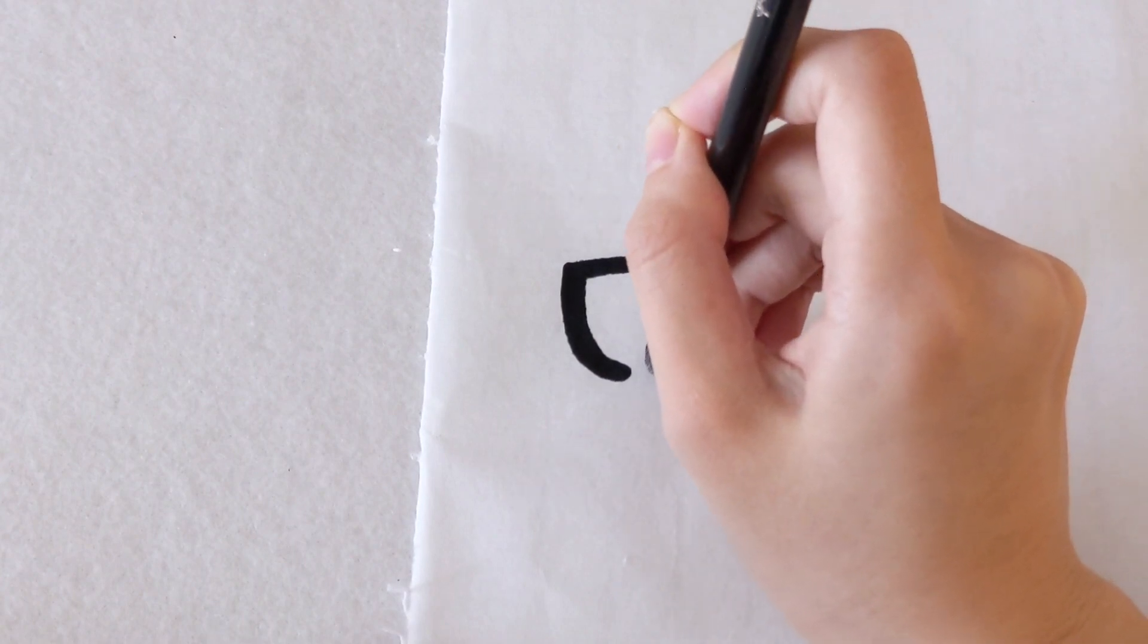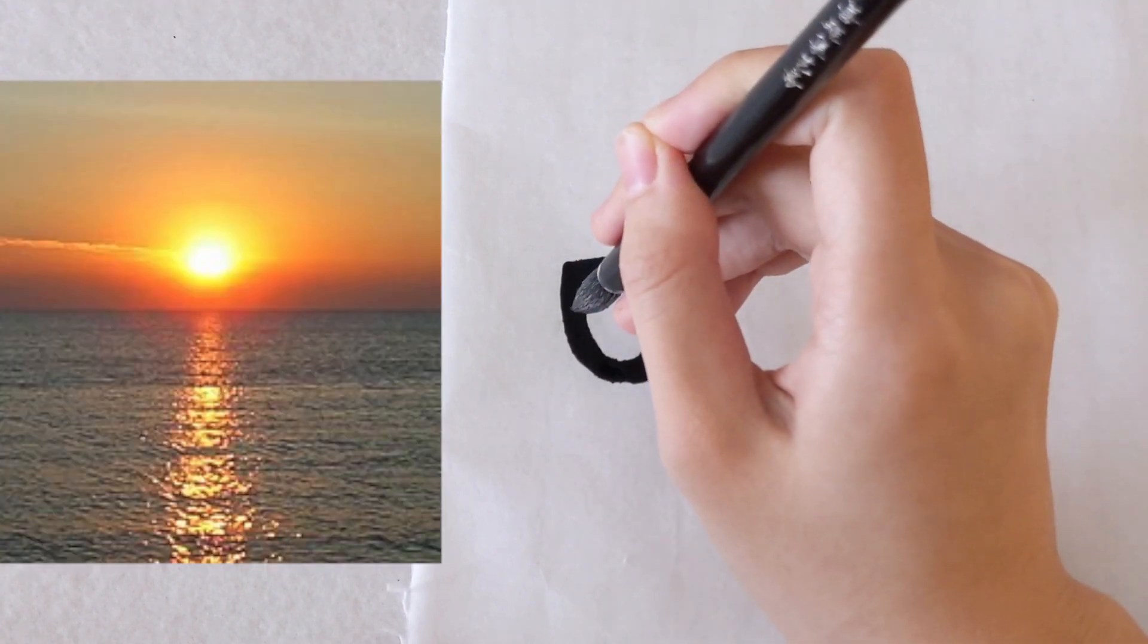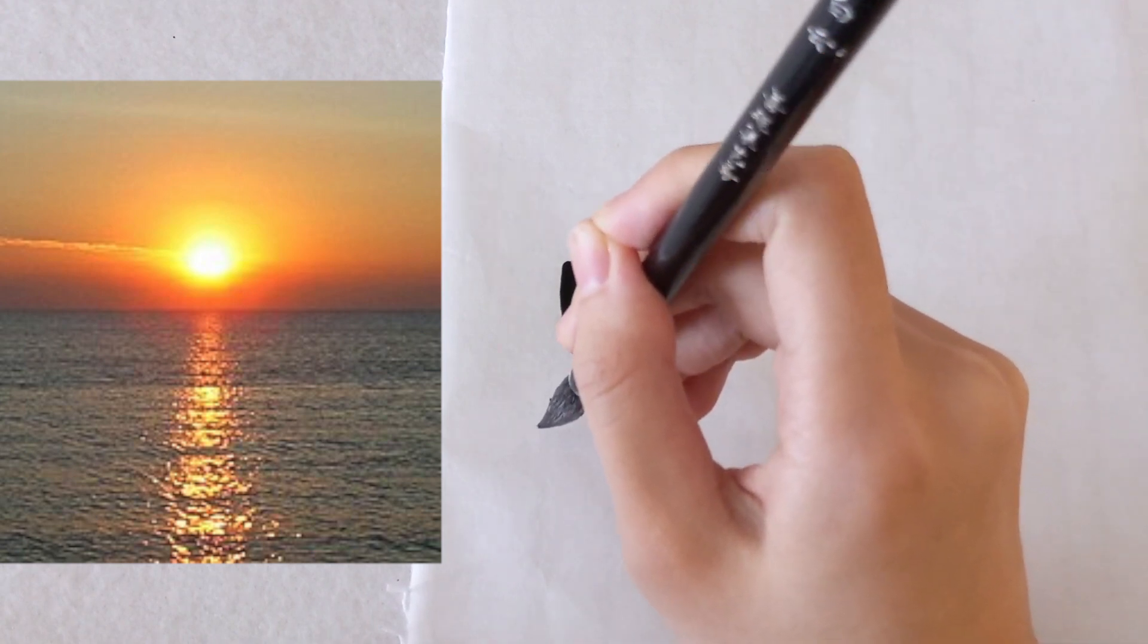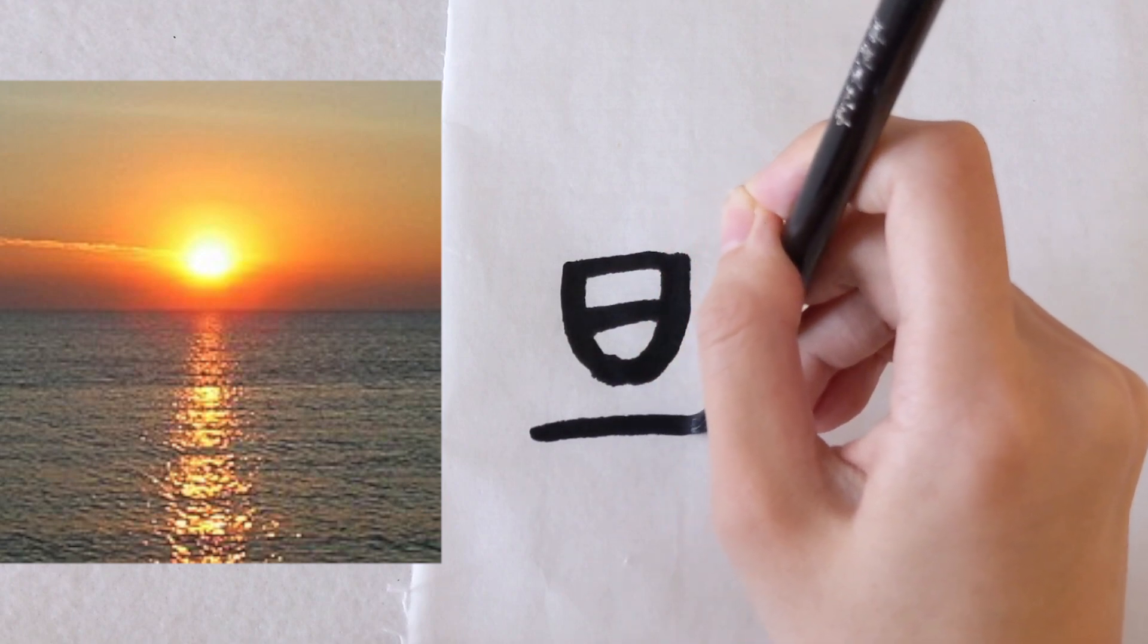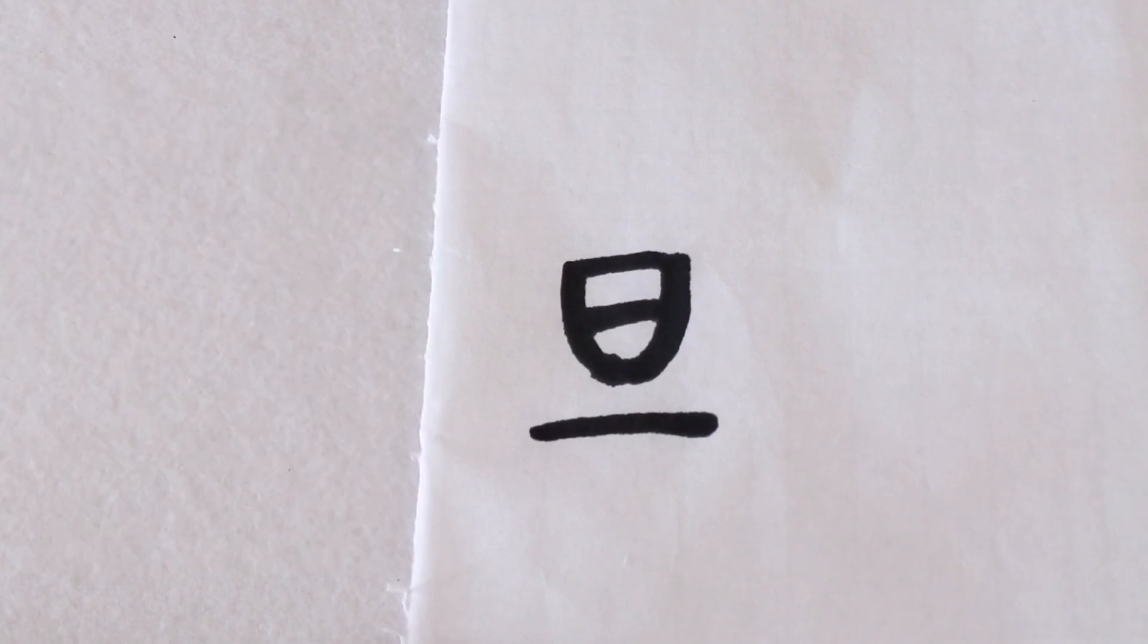So the first character is much easier to guess with the picture on the left. Here I am writing the seal script, one of the earliest scripts in Chinese history. Can you see the similarities between them? Especially, can you guess what the top part means? The top part means sun and it's pronounced as 日, and it's actually how we are writing sun these days.